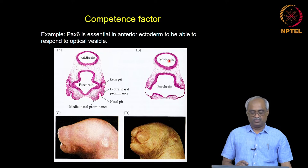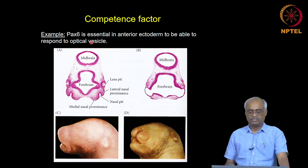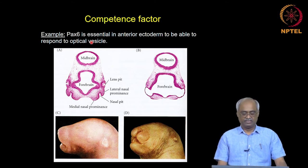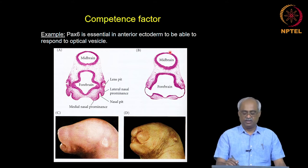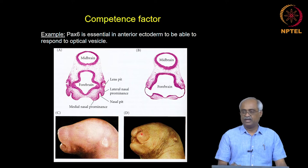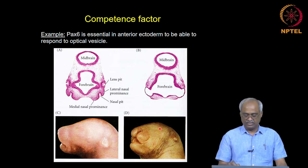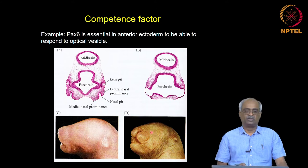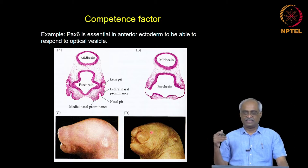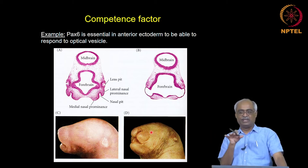Pax6 expression in the anterior ectoderm makes it competent. If you do not have Pax6 expressed, as seen in panel B, you do not make the eye socket itself — the lens pit does not form. There are additional defects; the mouse ends up not forming the head itself. Pax6 is a transcription factor we already know, and its expression is controlled by multiple modular enhancers.